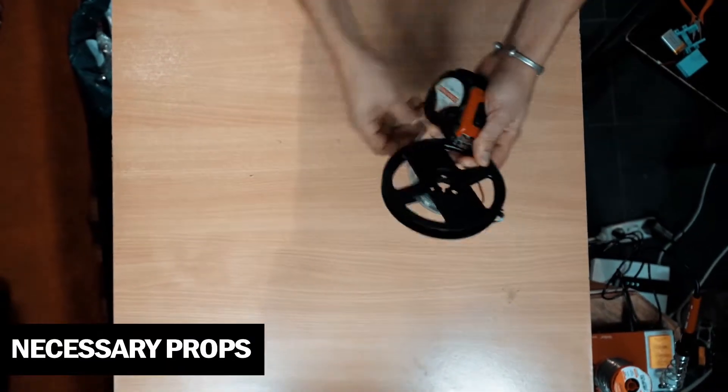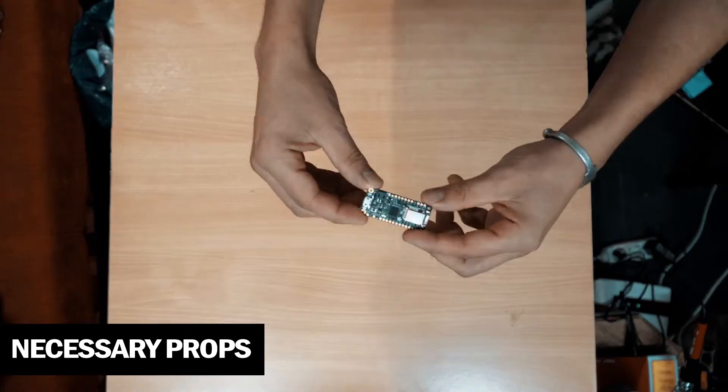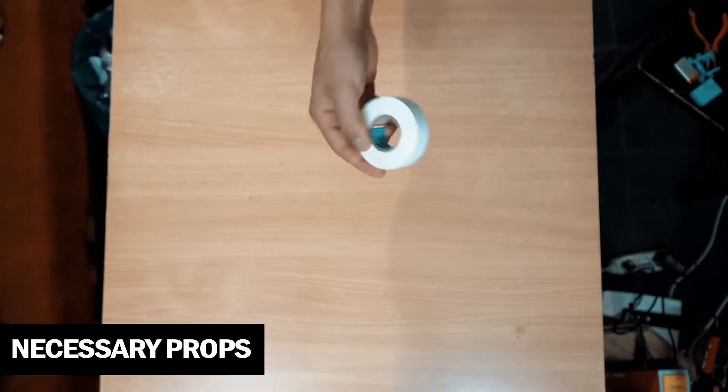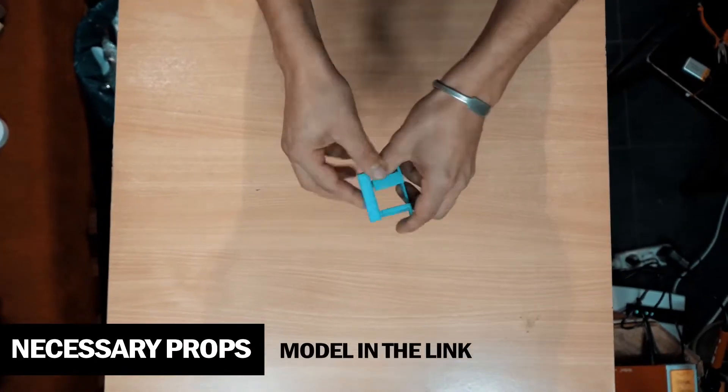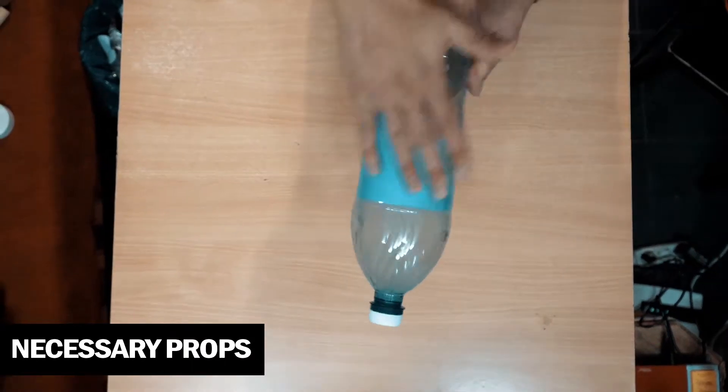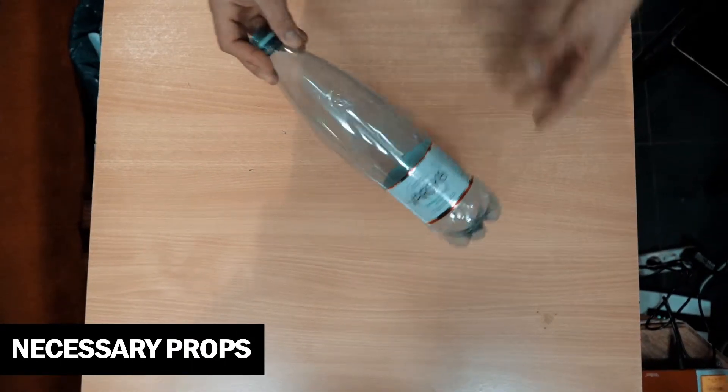Necessary props: wooden sticks, LED, some wire, Feather M0, on-off switch, tape, 3D printed model, battery, a big bottle with flat part, another bottle for the head.